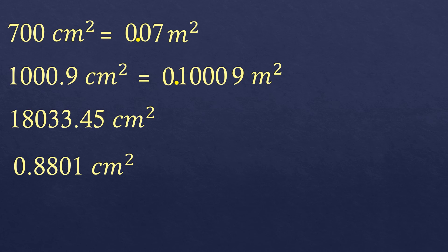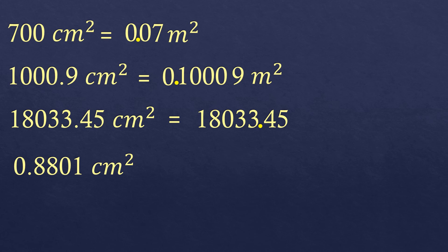Next, we have 18,033.45 square centimeters. Let's convert this into square meters. We move the decimal point four times to the left — one, two, three, four. There are no empty spaces to fill in with zeros, so we directly put the unit square meters. So 18,033.45 square centimeters equals 1.803345 square meters.